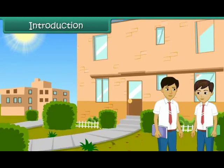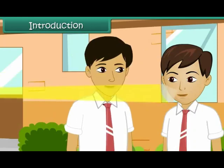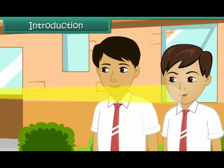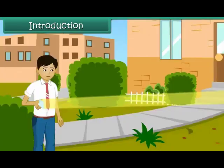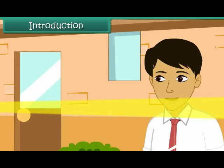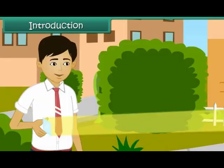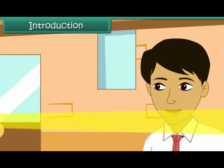It is recess time at school. You and your friends are out in the lawns. Suddenly a bright light hits you in the eye. You and your friends move to a different location. This time the bright light hits your friend. The bright light seems to be following you. You are confused. You look around and see Amman standing at a distance with a mirror in his hand.